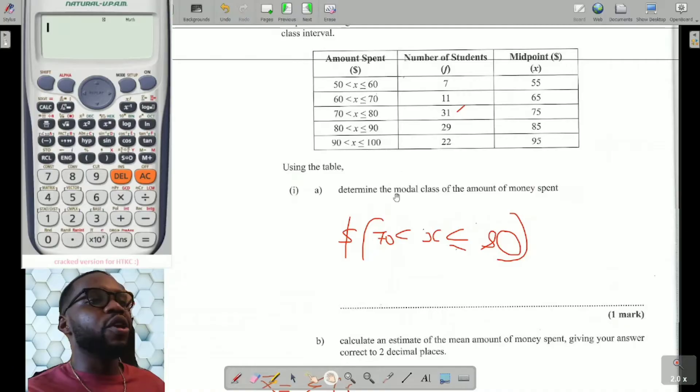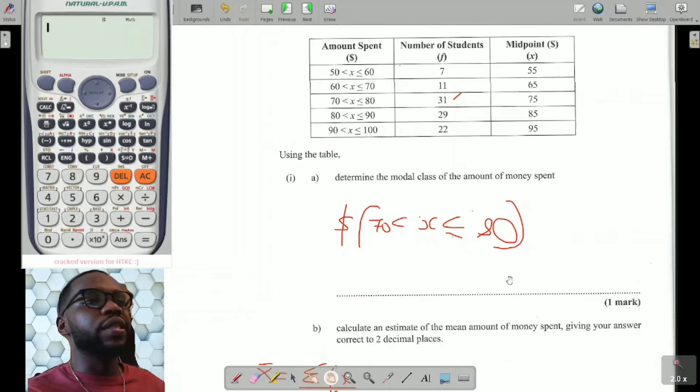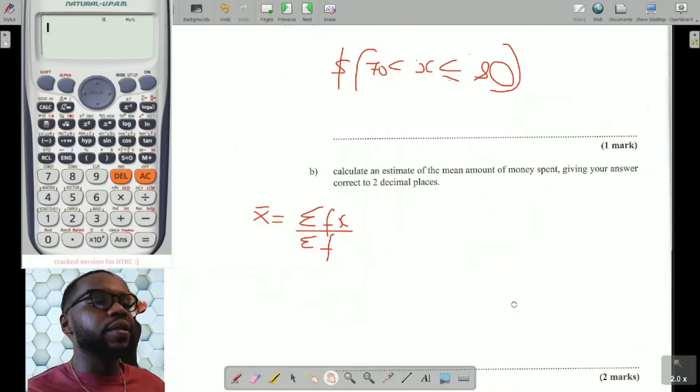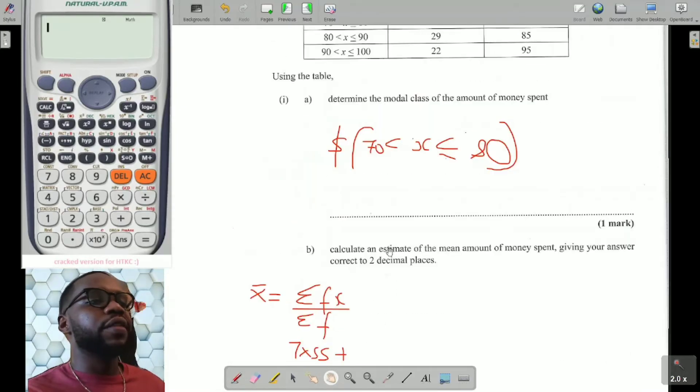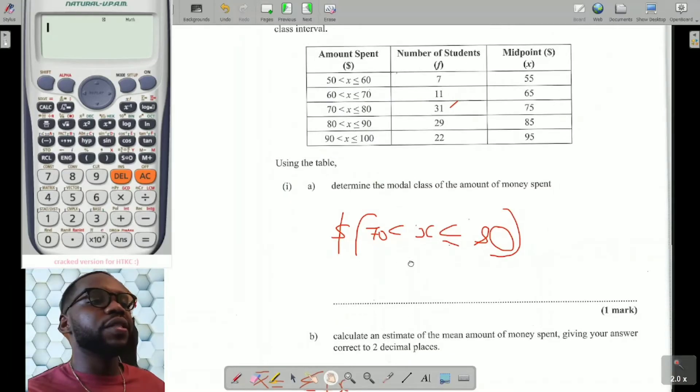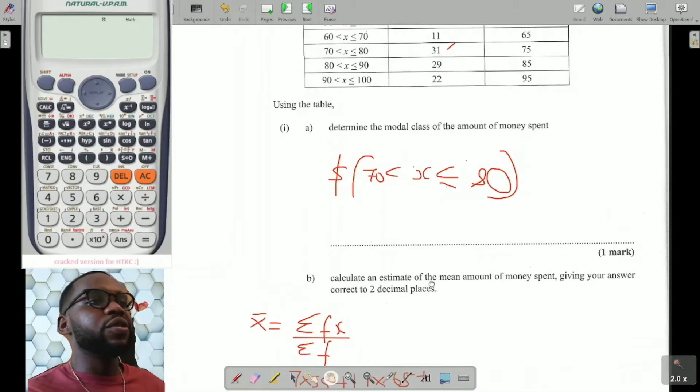So we need to find the midpoint with a corresponding frequency. So it would be 55 times 7 plus 65 times 11 plus 75 times 31 plus 85 times 29 plus 95 times 22. So you have the midpoint multiplied by the frequency, which is also the number of students. So let me just go and plug it in the calculator. I could create an FX column or I could just go ahead and work it out because it's not that many values.